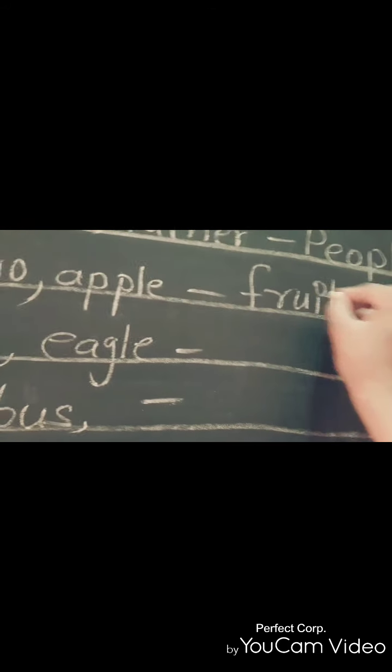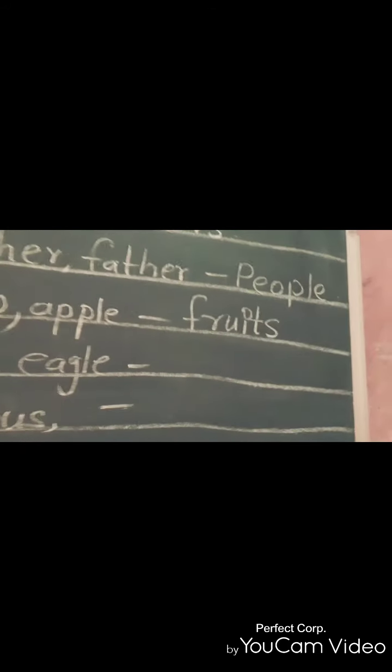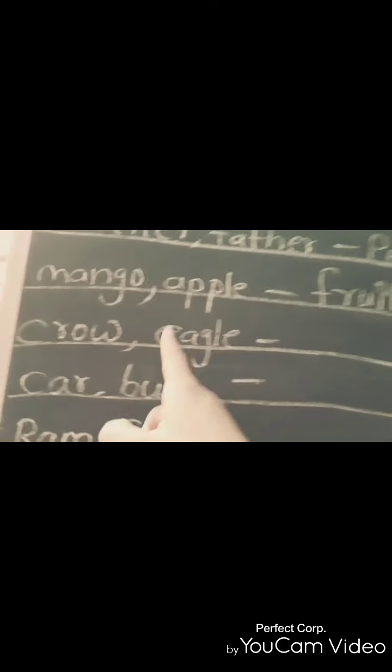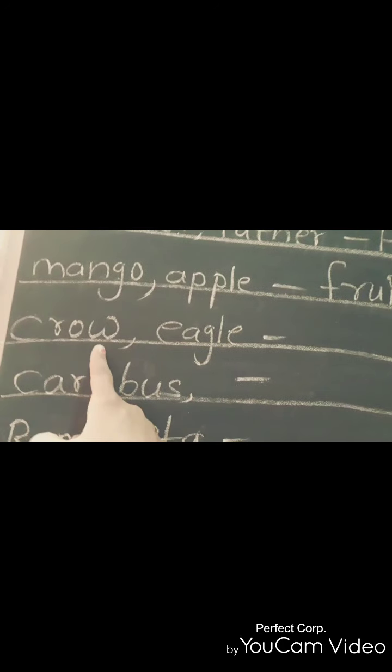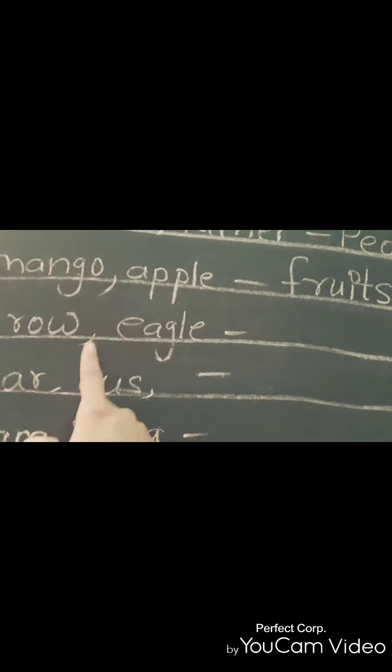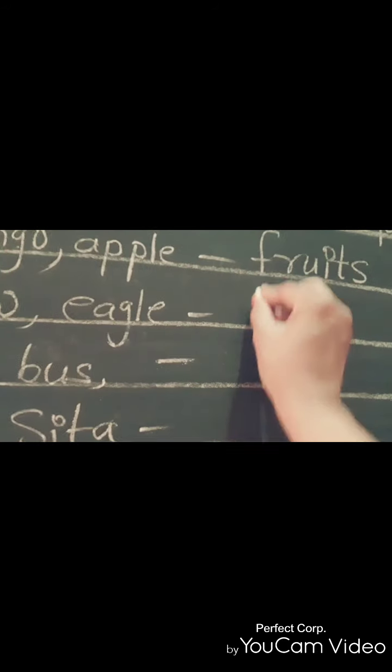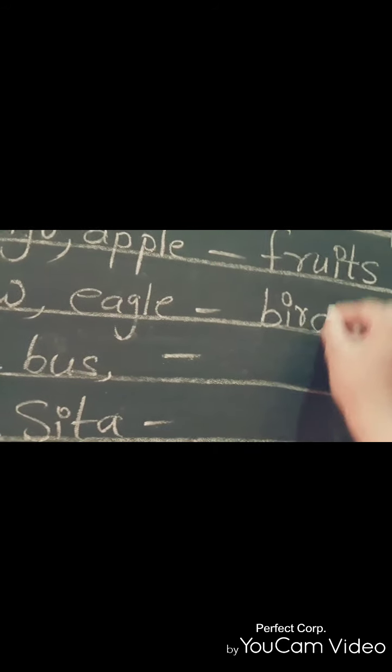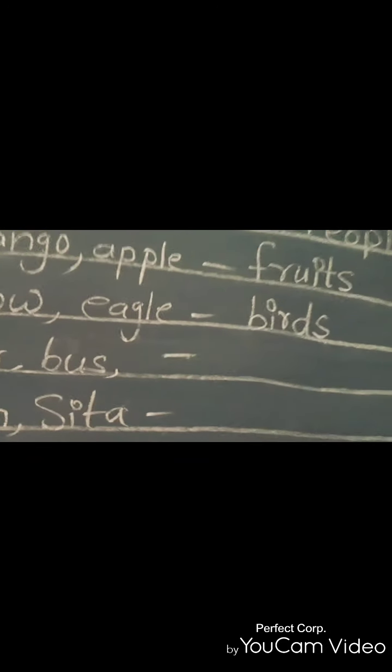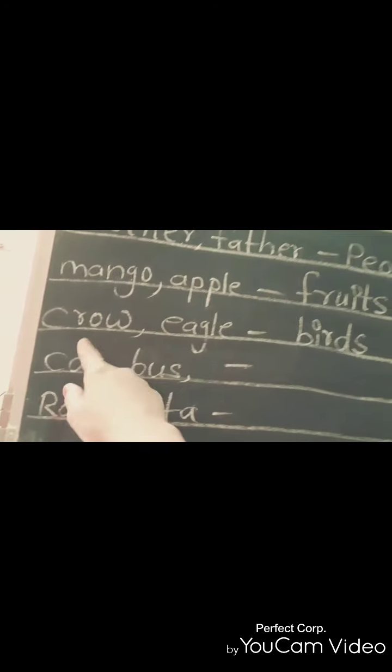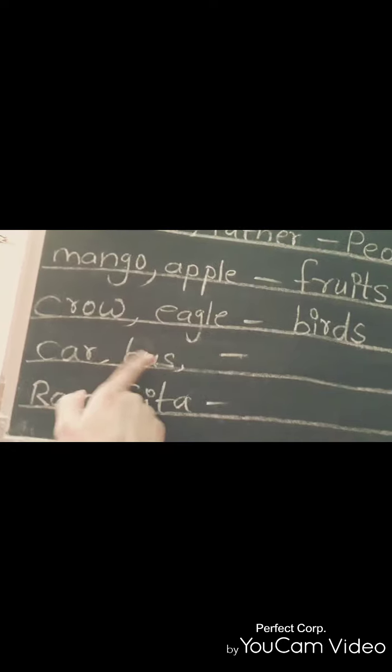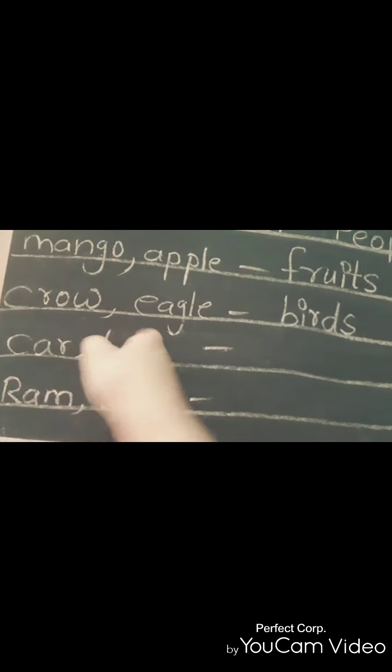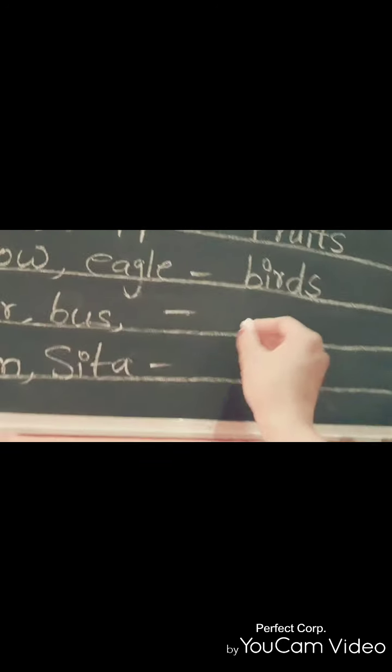Look at board and watch the video again and again. In third line, I wrote the spelling of crow and eagle. These two are the variety of birds. B-I-R-D-S, birds. In fourth line, I wrote the spelling of car and bus. These two are the variety of things.